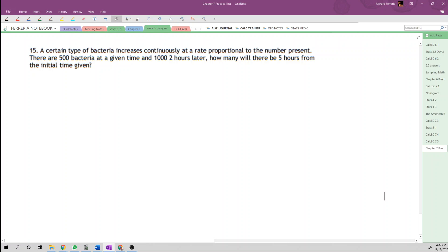Here's our Chapter 7 Practice Test Number 15. A certain type of bacteria increases continuously at a rate proportional to the number present. There are 500 bacteria at a given time and 1000 two hours later. How many will there be 5 hours from the initial time?